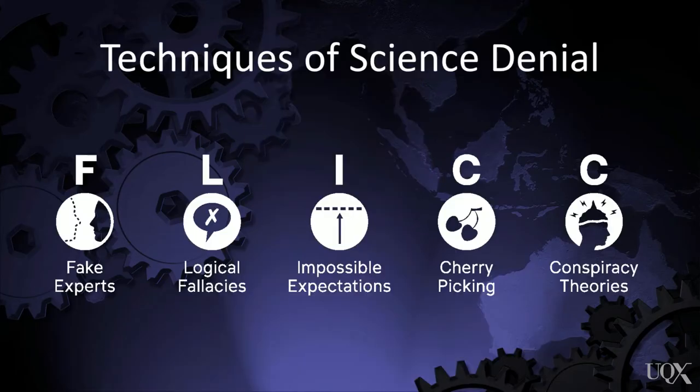If you want to be resilient against misinformation, you need to be aware of the different techniques that are used to mislead. A good starting point to understanding the techniques of denial is FLIC. FLIC stands for fake experts, logical fallacies, impossible expectations, cherry-picking, and conspiracies. These are the five techniques of science denial, and they're seen in every movement that denies a scientific consensus, whether it be human-caused global warming, vaccine safety, or the link between smoking and cancer.